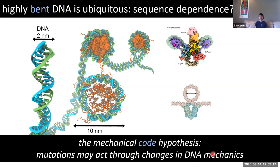That is what people call the mechanical code hypothesis. Can mutations act directly through changes in DNA mechanics? And if that's the case, then evolution of the genetic code and codon choice and many other properties could have been dependent on sequence-dependent DNA mechanics. To answer this question, we need a lot of data — many different sequences with measured DNA mechanical properties. So that is the topic of this talk.